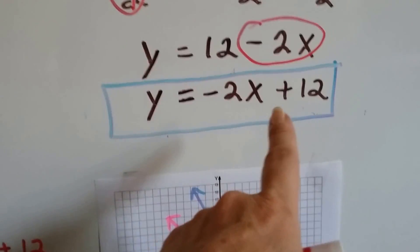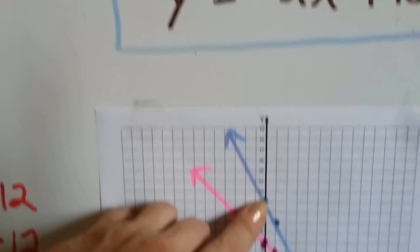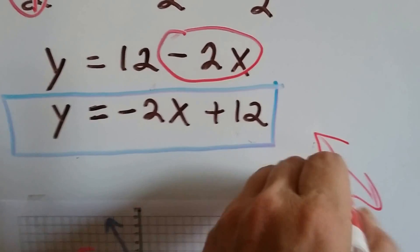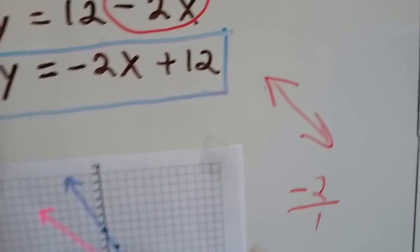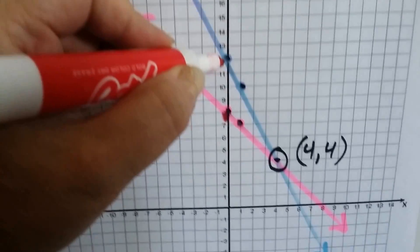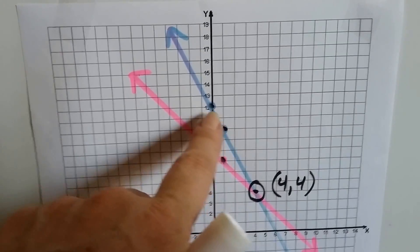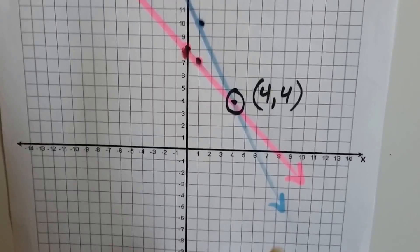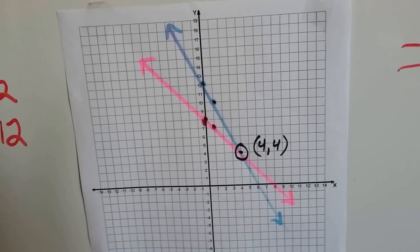Now for the blue line: the y-intercept is at 12, so we plot that point. We have a negative 2 slope, so the line is also going in the negative direction. A negative 2 slope means the rise over run is negative 2 over 1 — we go down 2 and over 1. We plot that point, draw the line through both points. The two lines cross and intersect at 4, 4. X is 4 and y is 4 — that's where they intersect.